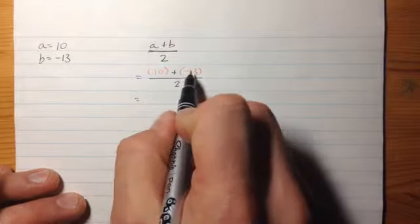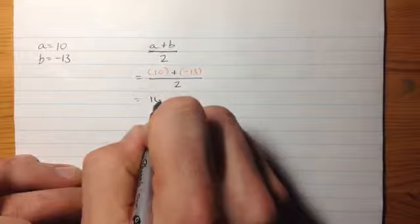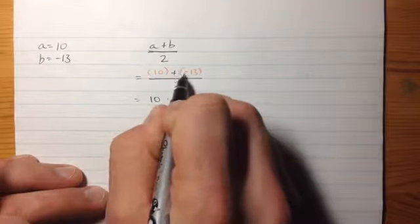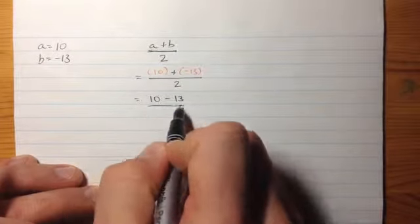I have to evaluate this top expression and then divide that value by 2. That top expression, you might be able to do this integer math right away, or you might want to do something like changing it to, instead of plus negative 13, change it to minus 13. Those are the same thing, they're equivalent, whatever you like.